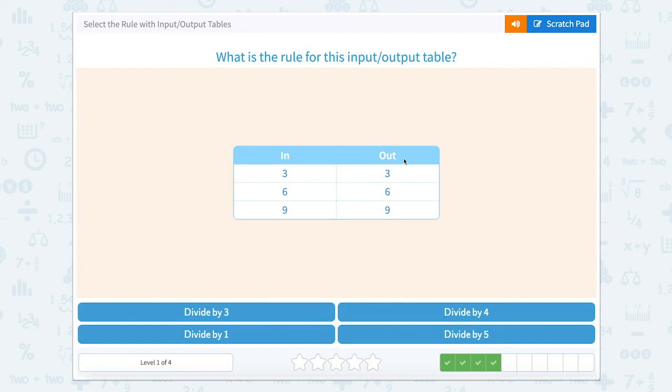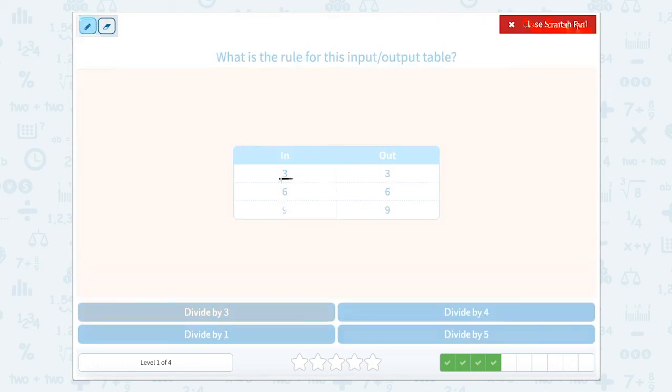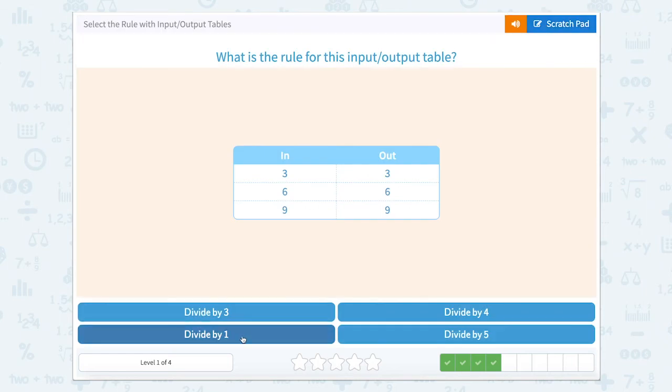Oh look at here. I see the same thing. I'm looking at a 3 in my input and it's going to a 3 to my output, a 6 from my input, 6 to my output, 9 from my input, and 9 from my output. So in this case, I am dividing by 1 again.